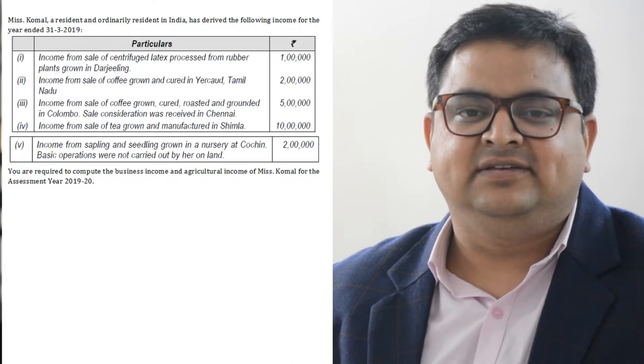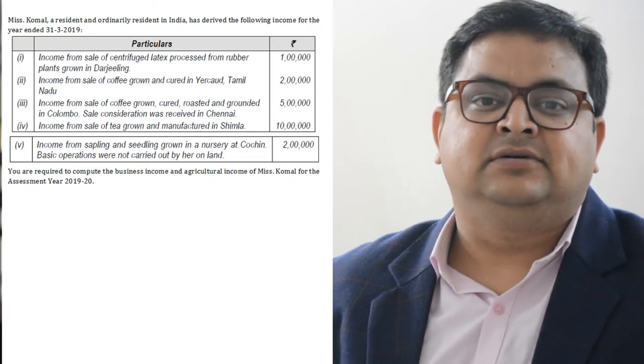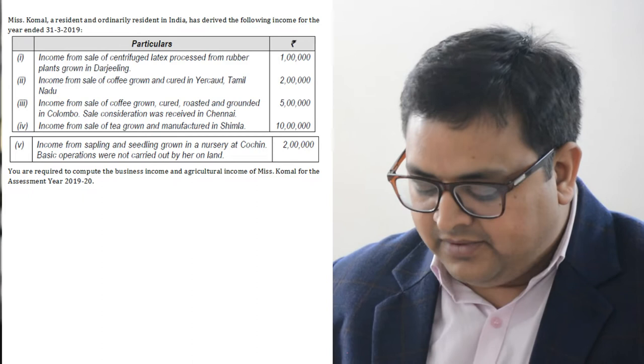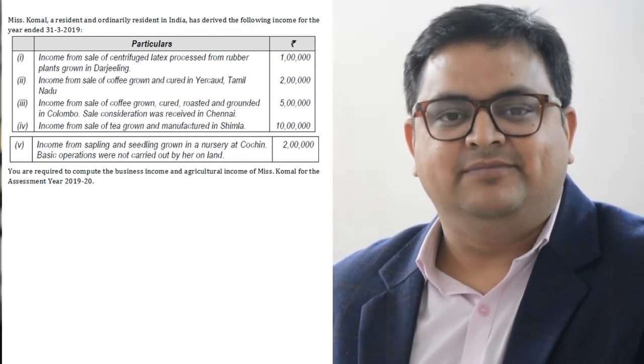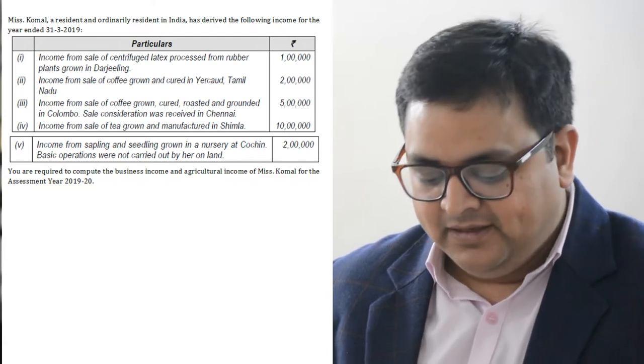Hi everyone, let's come to question number 27. Students watching this video for the first time, please refer to the description - you can also download the practice question file. This question is very important for examination. It is an essay question frequently asked in exams where you have to determine out of the total income which the associate has earned, how much is agriculture and how much is business income. This question says that Miss Komal, a resident and ordinary resident in India, has derived the following five types of income. You are required to compute the business income and agriculture income of Miss Komal for the assessment year 1919-20.